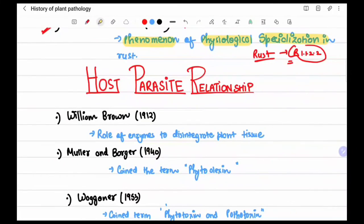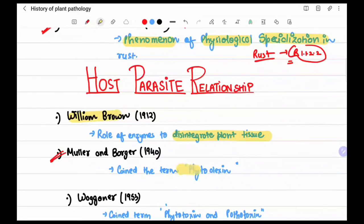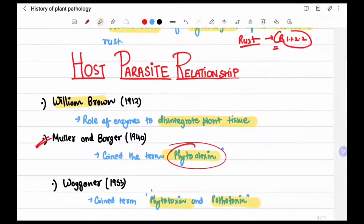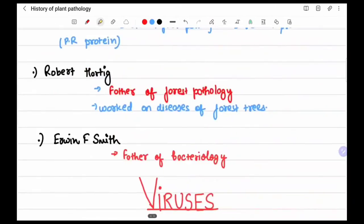Now for host-parasite relationships: William Brown described the role of enzymes such as lysozyme in disintegrating plant tissues. Muller and Borger coined the term 'phytoalexin.' Wagner coined the terms 'phytotoxin' and 'pathotoxin.'